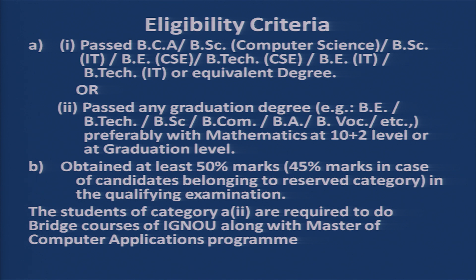The eligibility criteria for this program has two categories, A and B. Category A1 requires you to have passed BCA, BSc Computer Science, BSc IT, BE CSE, BTech CSE, BE IT, or an equivalent degree. Category A2 covers any graduation degree such as BE, BTech, BSc, BCom, BA, etc., preferably with mathematics at 10+2 level or graduation level.